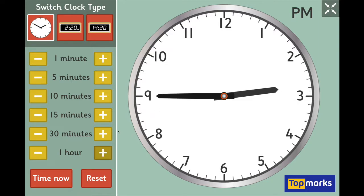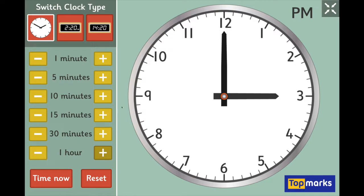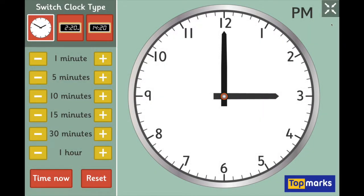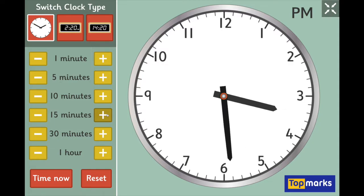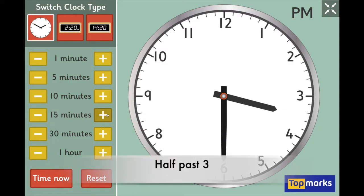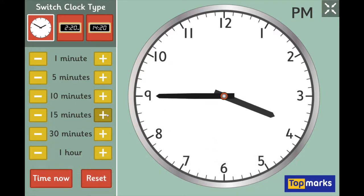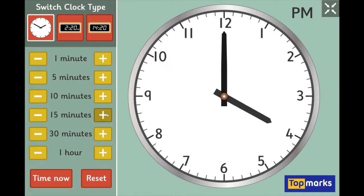And finally, three o'clock — visualise where the hands will be. Big hand pointing to twelve and little hand at exactly three because it is exactly three o'clock. Let's move from three o'clock to four o'clock together. Moving on fifteen minutes, it is now quarter past three. Moving on another fifteen minutes, it is now half past three. Moving on another fifteen minutes, it is now quarter to four. And moving on the final fifteen minutes, it is now four o'clock.